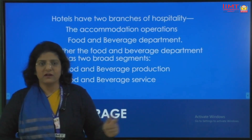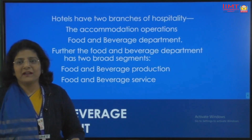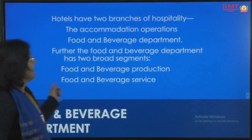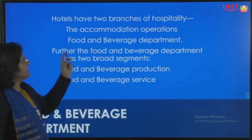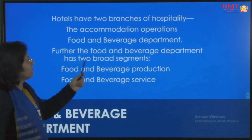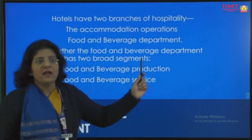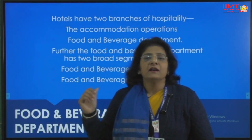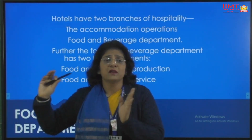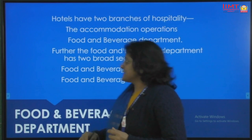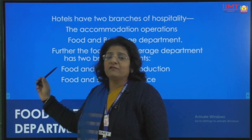The F&B Service department is responsible for serving food at the right temperature, with the right accompaniments and condiments. Hotels have two branches of hospitality: accommodation operations and food and beverage. F&B further divides into Food Production — where chefs cook under hygienic, sanitary conditions with proper storage — and F&B Service, which handles how that cooked food is served to guests.